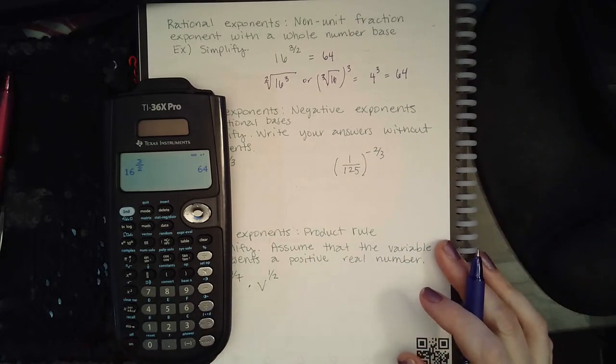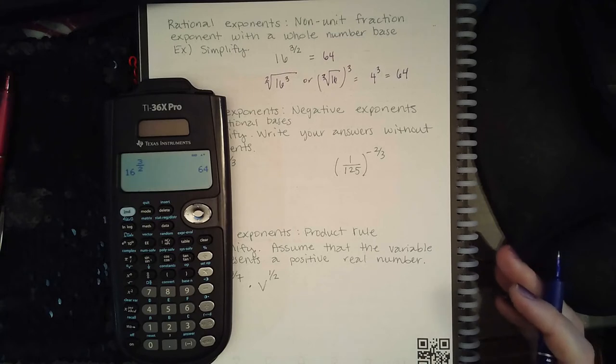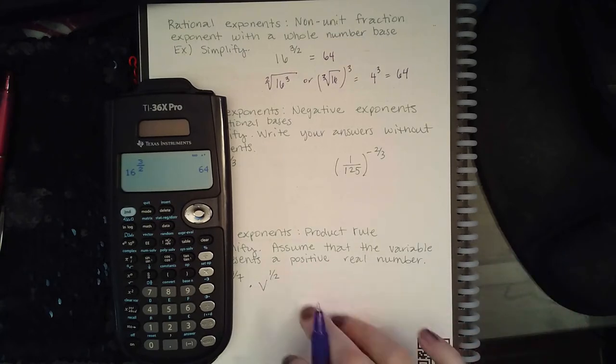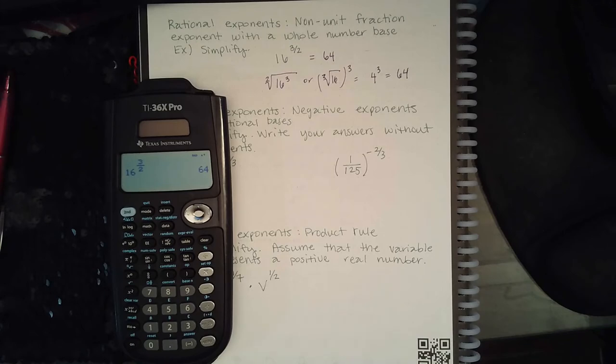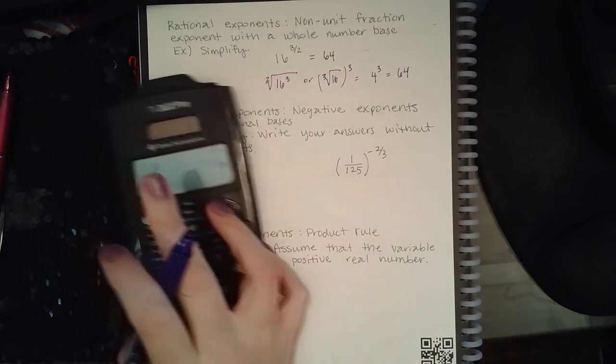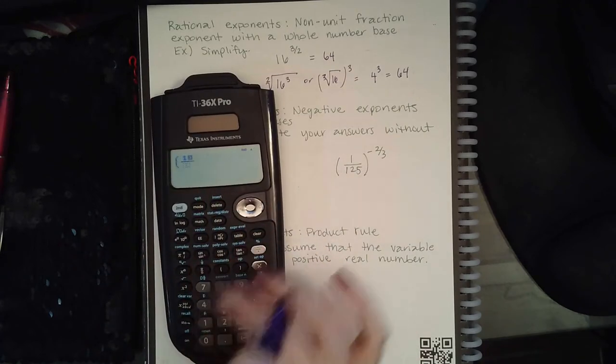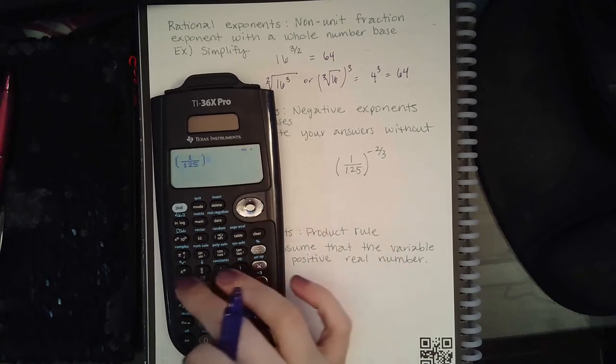Okay. Again, for now they're numbers so we can use the calculator, but when these things are no longer numbers like in this topic down here, it is good to know what those exponents mean. So here we have this problem. We're going to type it in exactly the way it is: parentheses, fraction 1 over 125, close the parentheses, exponent, and it's negative 2 over 3.